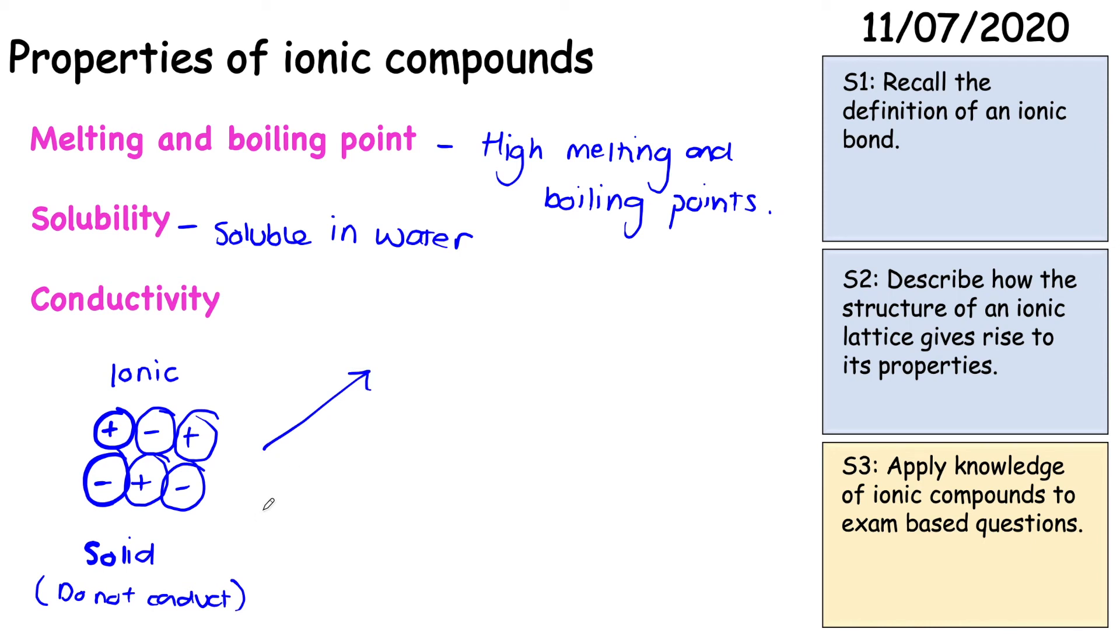However, if you do two things to these so you can either melt them or you can dissolve them then they do conduct electricity. So let's have a look at the melting of this first. If you melt them then the ions become free to move. It breaks the electrostatic forces because it's such a high temperature. And what you can then see is that the ions are now separated. There's space between them. So they do conduct electricity. And it's the same thing when you dissolve it. The water molecules break up this ionic lattice, this ionic structure and leave the ions much further apart, separated. So now again because there's space between them they are now free to move. So they do conduct.